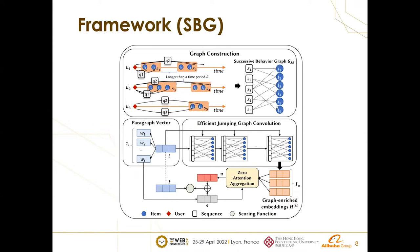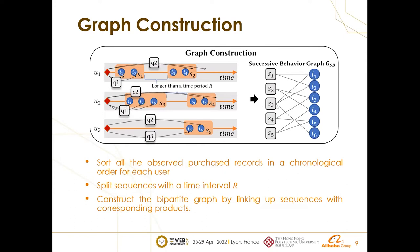Our overall framework has three stages. First, we construct a successive behavior graph from observed user behavior sequences. Then we employ an efficient graph convolution with jumping connections to enrich the product representations. The enriched product vectors are subsequently used in our ordinary product search model based on latent space vectors. In summary, our model improves the latent space-based product search framework with the relations on the successive behavior graph using graph convolution.